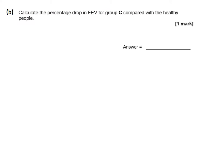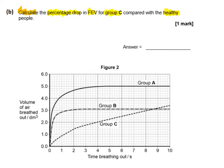Question B asks us to calculate the percentage drop in FEV for Group C compared to the healthy group. We need the FEV value for Group A and the FEV for Group C. The method for a percentage decrease is: work out the difference, divide by the original value — which is the healthy value — and multiply by 100 to get a percentage. Use a ruler to draw accurate lines off the graph at one second.